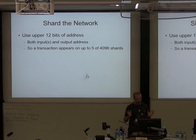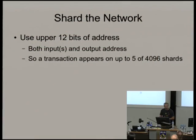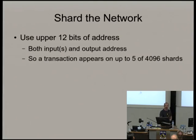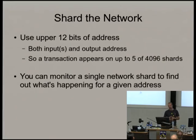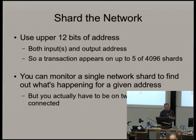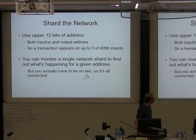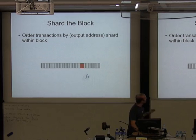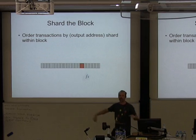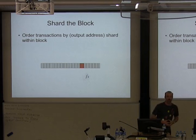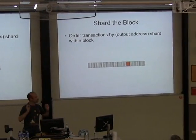All of these addresses are 160 bits. So let's just use the upper 12 bits and make ourselves 4,096 shards. We actually have input and output addresses, so a transaction may appear across up to five of these shards — four input addresses and one output address. This gives you the nice ability to monitor a single network shard. If you care about a particular address — people are paying you tiny amounts of money — you just monitor that shard and you will find out about all the payments that go to you. In the protocol, we require you to sit on two shards minimum, because otherwise everyone might just sit in their own shard and there'd be no cross-shard communication. Within the block, in Bitcoin they tend to just append transactions as they come in. In Petticoin, we insist they be ordered so that all the blocks in the same shard will be right next to each other.